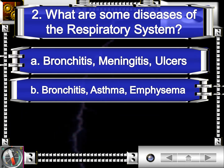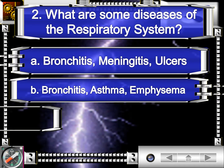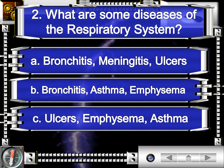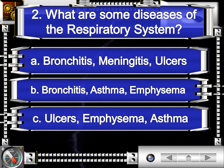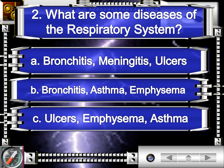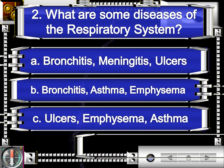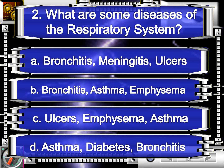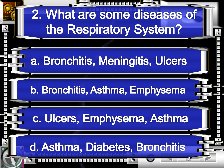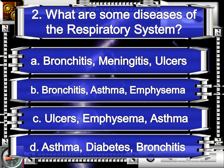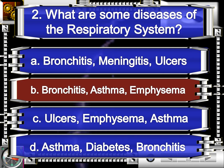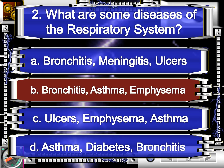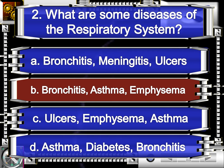Letter B, bronchitis, asthma, emphysema. Letter C, ulcers, emphysema, asthma. Or letter D, asthma, diabetes, bronchitis. The answer is letter B, bronchitis, asthma, emphysema.